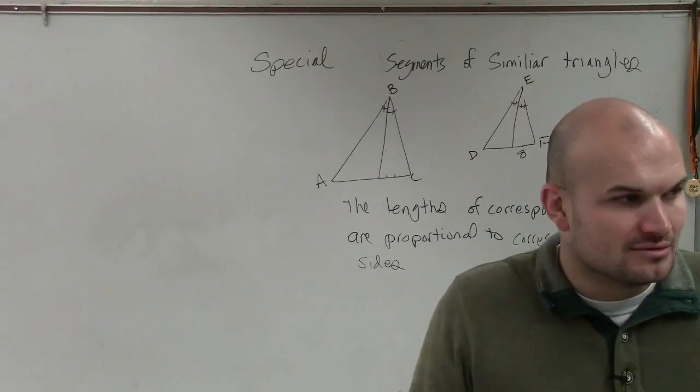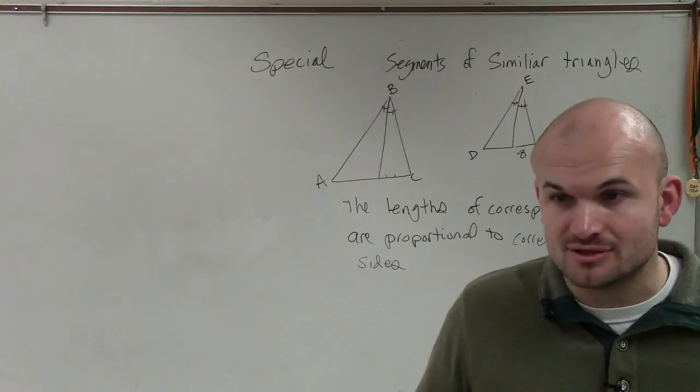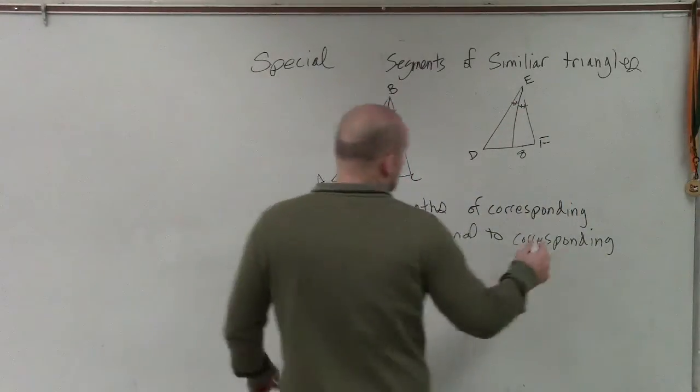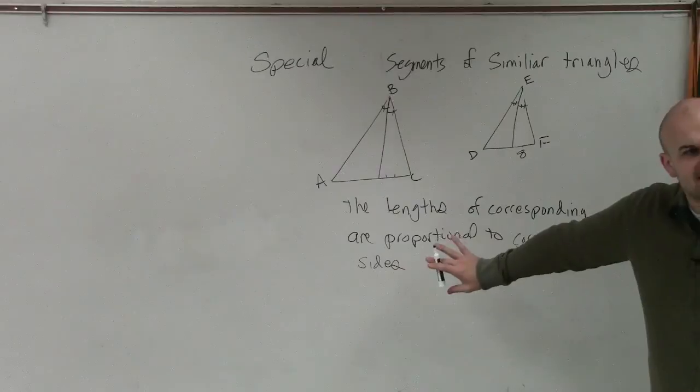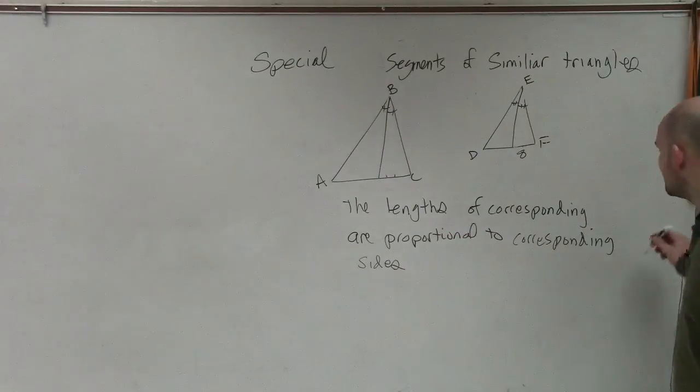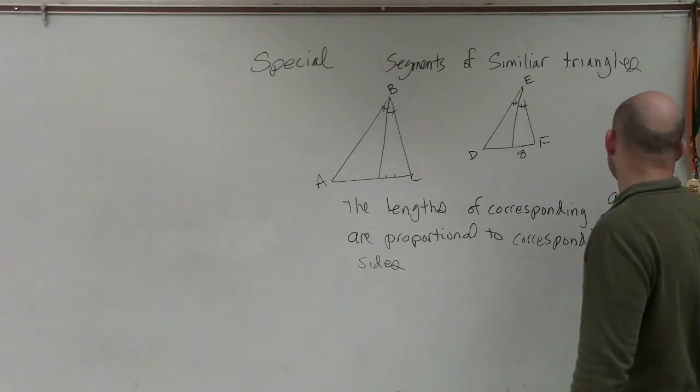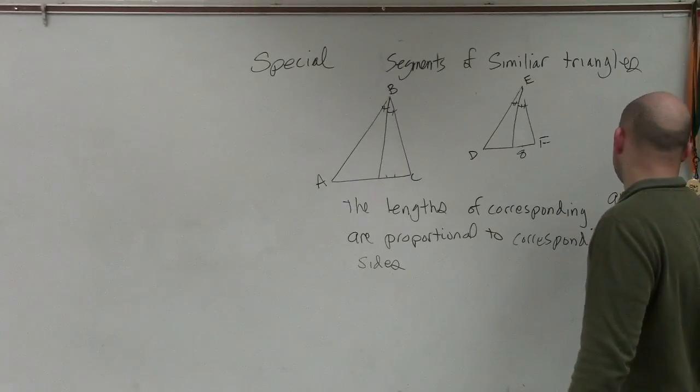So if you have a triangle or two similar triangles, and you have one line that bisects another angle, then guess what? This whole statement is true as well. So if you guys just want to do like a little quotation mark so you're not writing everything, but it's also true for angle bisectors.